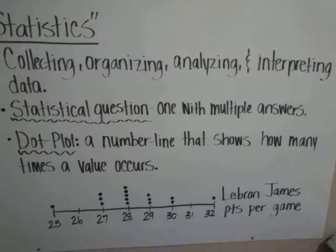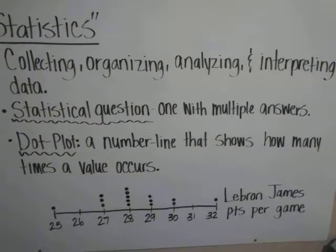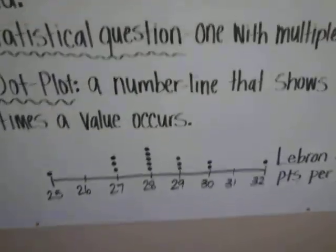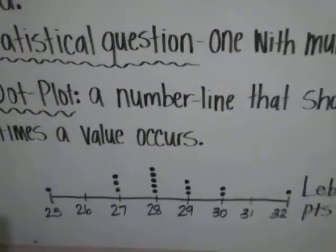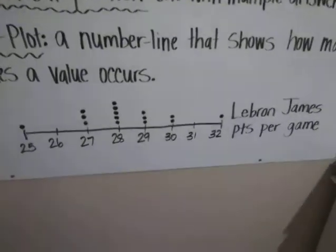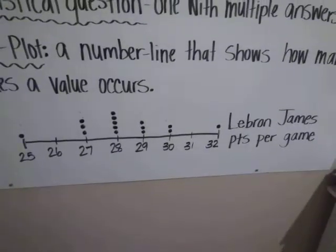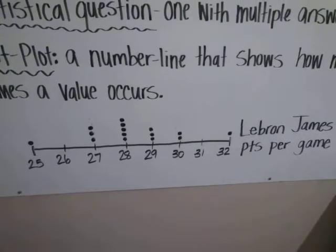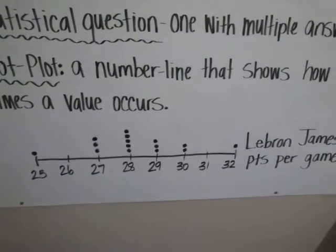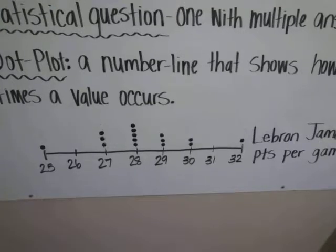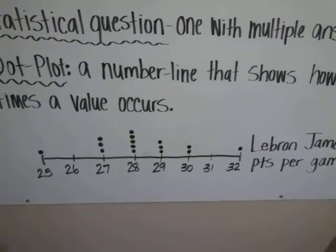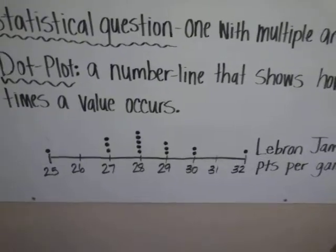Then we're going to analyze that information and lastly we're going to interpret it. So the data has already been collected and organized in a dot plot. The title of this data is LeBron James points per game. We have values from 25 points to 32 points, all plotted on a dot plot from his last 15 games.